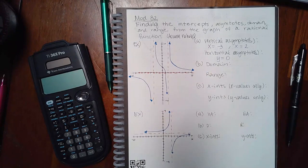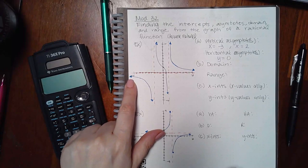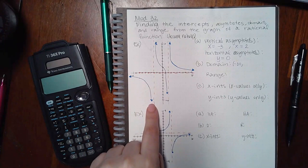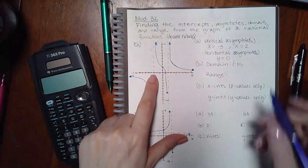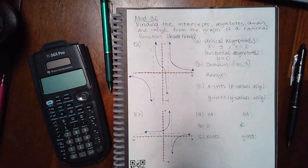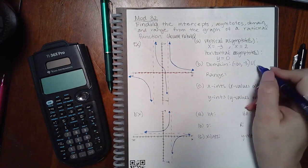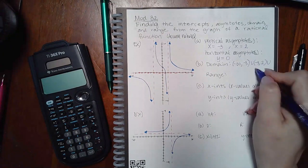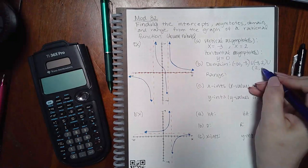Now the domain is all the x values from left to right. This is going from negative infinity, and as I trace it, there's a gap in my x values. So it can only go up to negative three, but it cannot include negative three because there's no point on that vertical line. Then you pick up on the other side of the vertical line, and it goes all the way to the next vertical line, and then finally this side goes to positive infinity.